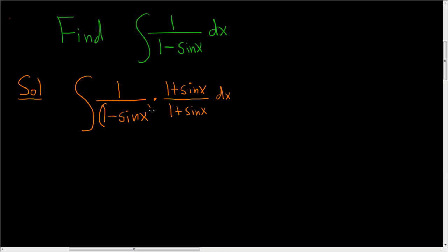And let me put this in parentheses for emphasis because now we can use the formula for the difference of squares. Recall that a minus b times a plus b is a squared minus b squared.